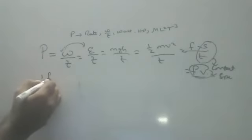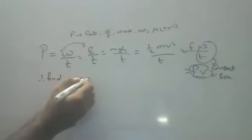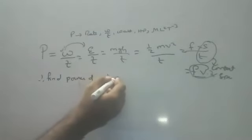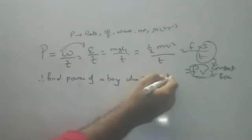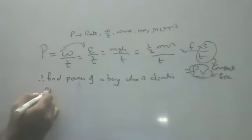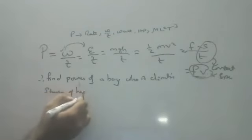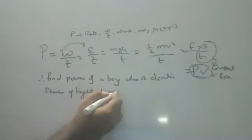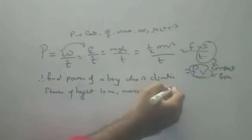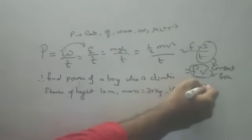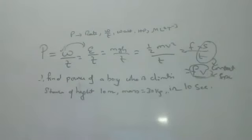First numerical: Find the power of a boy who is climbing a staircase of height 10 meters. His mass is 30 kg, and he climbs in 10 seconds. A 30 kg boy climbed a height of 10 meters — what is the power dissipated by him?